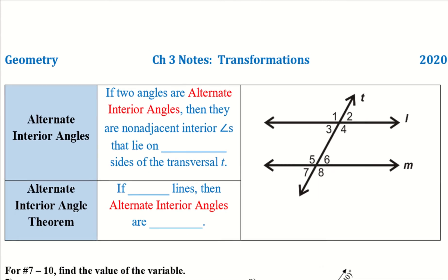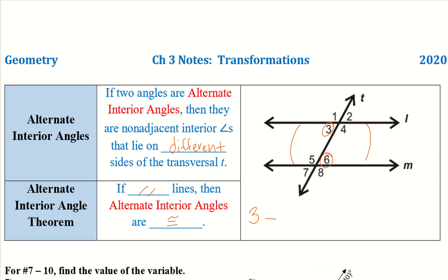Next we have alternate interior angles. If two angles are alternate interior angles, then they are non-adjacent interior angles that lie on different sides of the transversal T. Alternate interior angle theorem: if parallel lines, then alternate interior angles are congruent. Interior means on the inside of my parallel lines, and alternate means they're on separate sides — back and forth across the transversal. So angle 3 is congruent to 6, and angle 5 is congruent to 4.